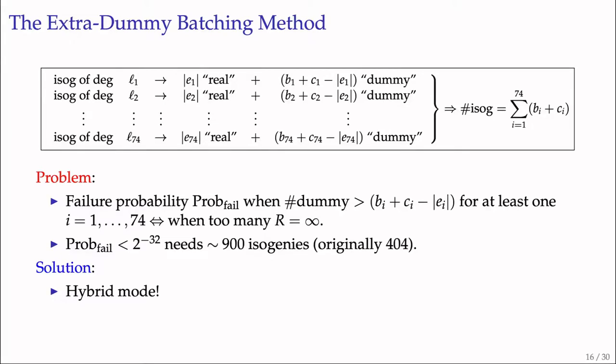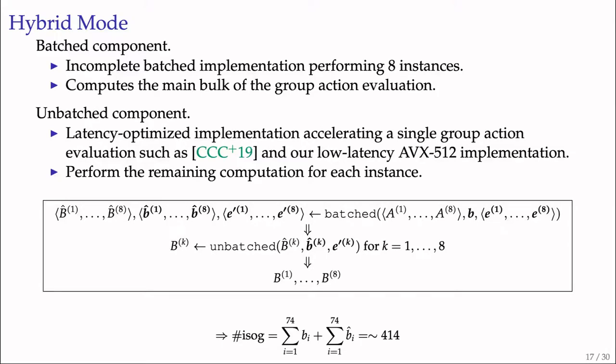Based on this discussion, we're looking for a way to significantly reduce extra dummy isogenies, eliminate the probability of failure, and maintain batching-friendly fashion. We found the solution: a hybrid mode. Hybrid mode means the entire batched software is composed of two different implementations - the batched component and unbatched component. The batched component is an incomplete implementation performing eight instances simultaneously. The unbatched component is a latency-optimized implementation accelerating a single class group action evaluation. The key idea is to first use the batched component to compute the main bulk of CSIDH group action for all instances, then use the unbatched component eight times sequentially to handle remaining computations.